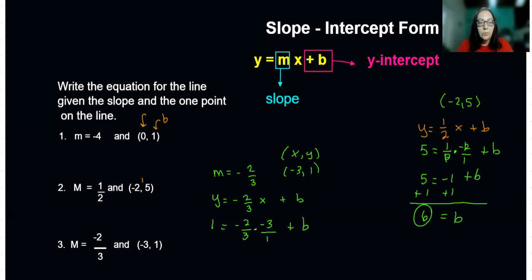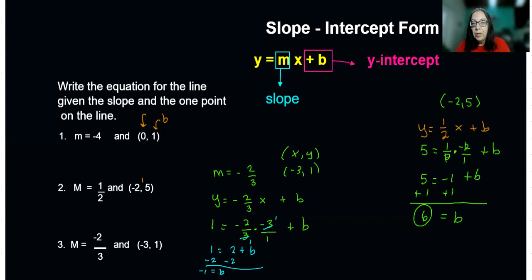Let's take our time here. The three and three reduce down to ones, so we get one equals negative two times negative one, which is two, plus b. Solving for b, I need to get rid of that positive two by subtracting it. So b equals one minus two, which is negative one. Now that I have m and b, I can write my equation: y equals negative two-thirds x minus one.